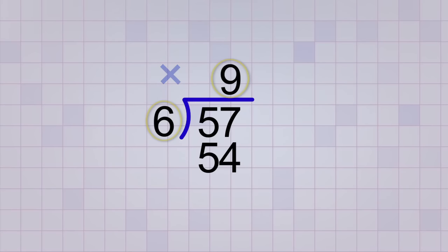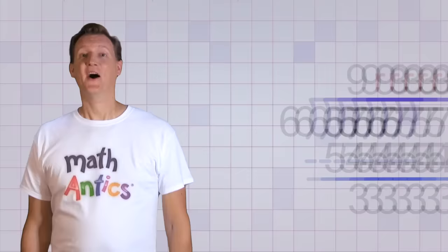Next, we multiply 9 by 6, which we already know will give us 54, because that's what our multiplication table showed us. Now we need to subtract 54 from 57. That gives us a remainder of 3. Again, that's good, because that's less than our divisor. So 57 divided by 6 equals 9 with a remainder of 3.